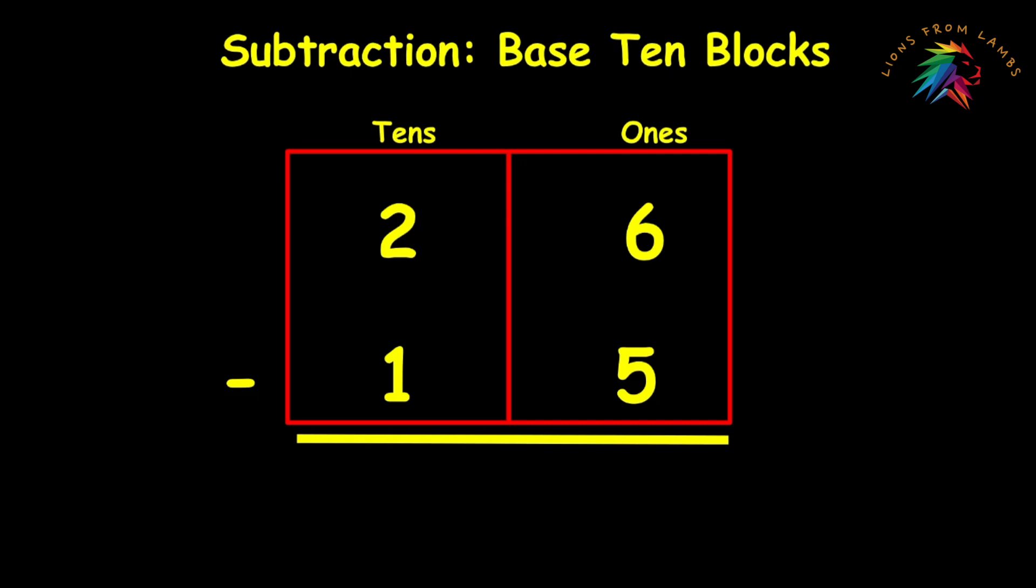We're going to start with base 10 blocks as our first strategy. Base 10 blocks are a little bit different in subtraction than they are in addition, and you'll see why here in just a moment. We're going to represent 26, the top number, the minuend, using base 10 blocks. And that's represented as six units in the ones place with a value of 6 and two rods in the tens place for a value of 20.